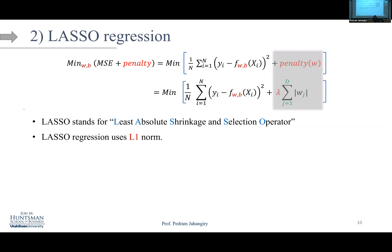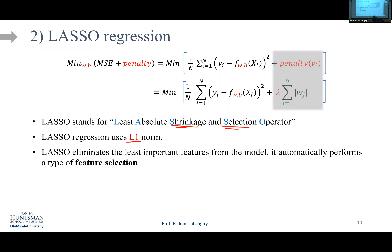That's the advantage of LASSO over ridge: it performs feature selection. The shrinkage effect penalizes the model a little more and gets rid of x₄ and x₅, which as the 'god' who knows the true model, I know are irrelevant. But what's the cost of LASSO versus ridge? We'll talk about that.